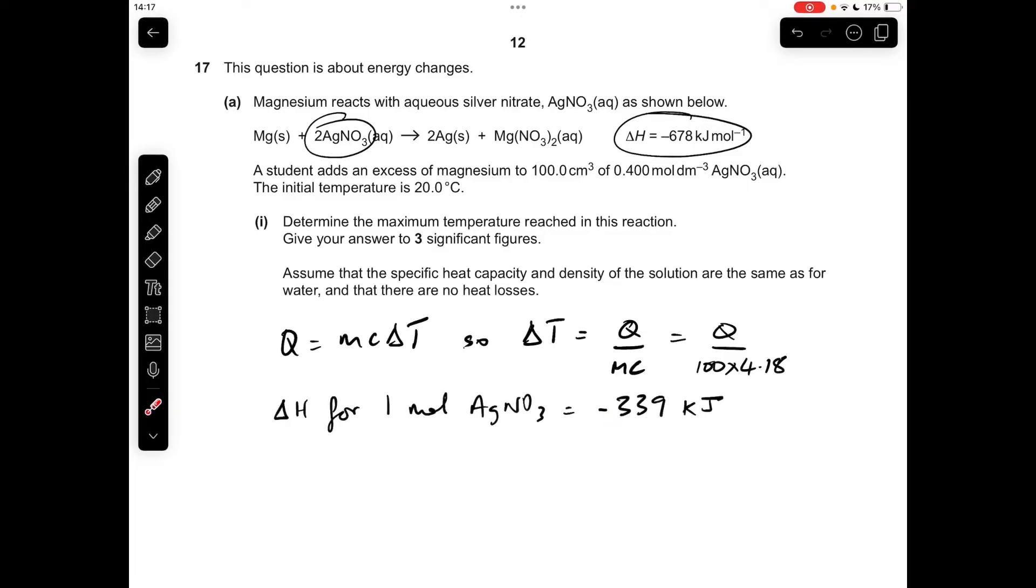Then we just need to work out how many moles of silver nitrate were actually used in the experiment, so that's going to be concentration times volume. So 0.04 moles of silver nitrate were used, so all we need to do now is multiply the moles by the number of kilojoules released per mole.